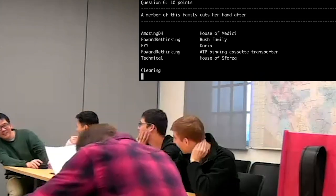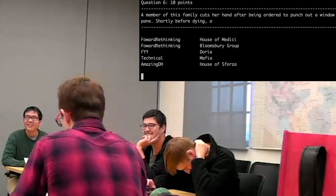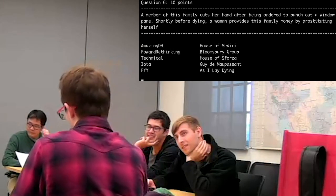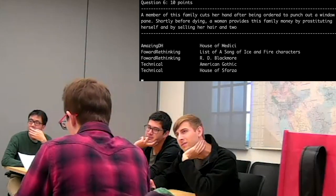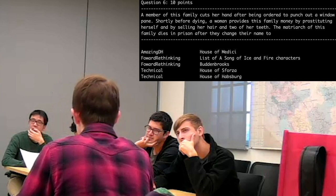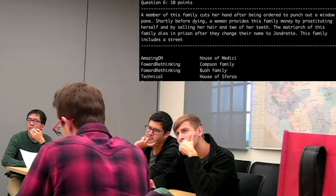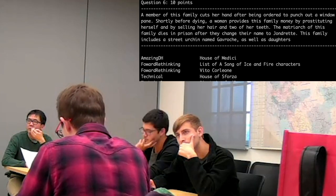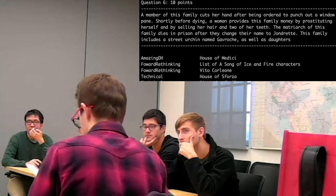A member of this family cuts her hand after being ordered to punch out a windowpane. Shortly before dying, a woman provides this family money by prostituting herself and by selling her hair and two of her teeth. The matriarch of this family dies in prison after they change their name to Jean Drette. This family includes a street urchin named Gavroche, as well as daughters... Thénardier? Yes.